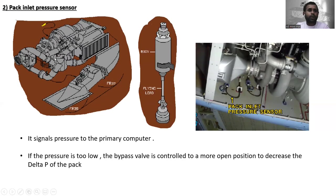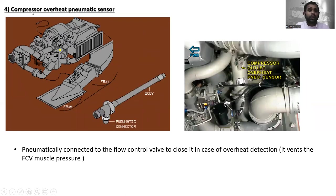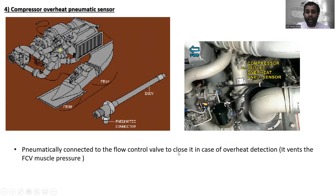The next component is the compressor overheat pneumatic sensor. You can see its location here — this is the pneumatic connector and the body. It is pneumatically connected to the flow control valve to close it in case of overheat detection. It vents the flow control valve muscle pressure.